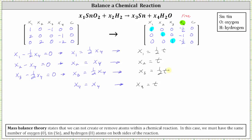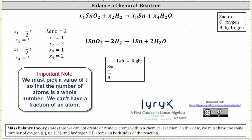All these equations must be true in order to balance the chemical reaction. Let's look at an example — let's say we let t equal two. Substituting two for t in all the equations, we get x sub one equals one, x sub two equals two, x sub three equals one, and x sub four equals two. Substituting these values back into the reaction gives us a balanced chemical reaction.